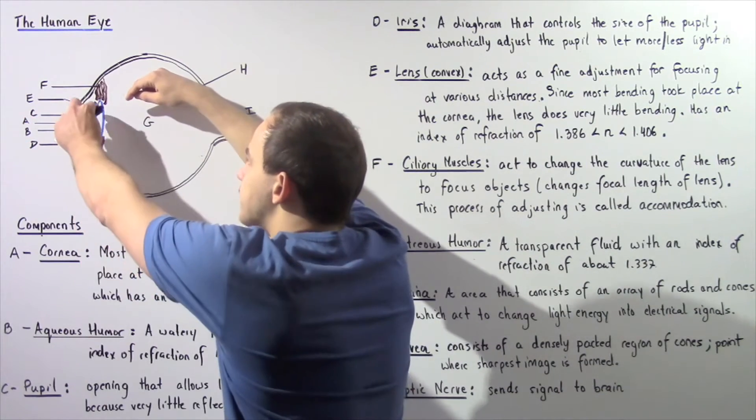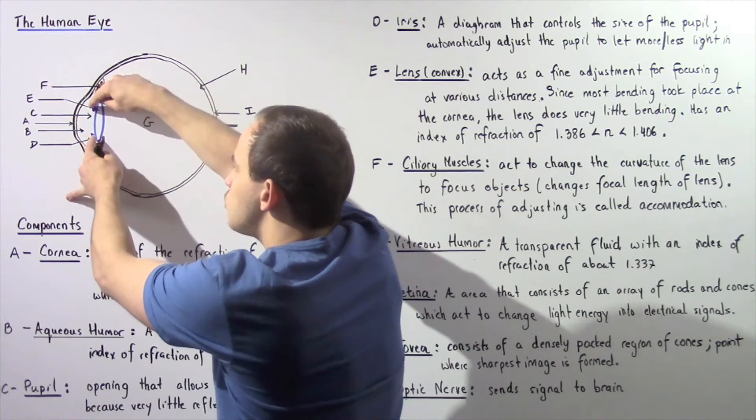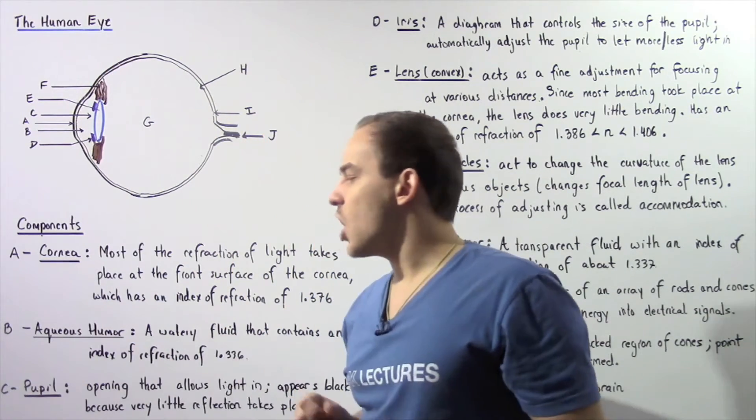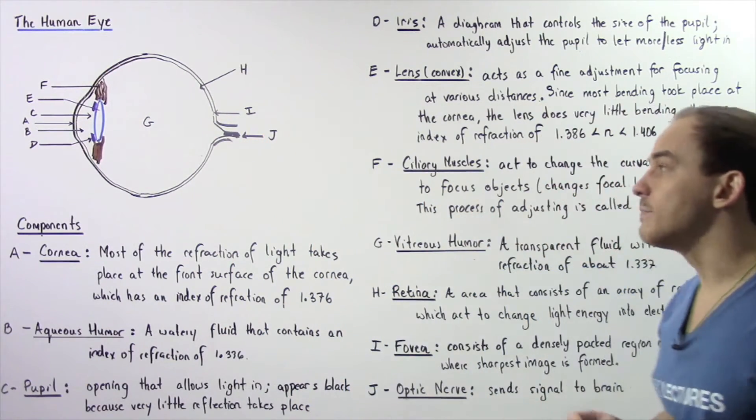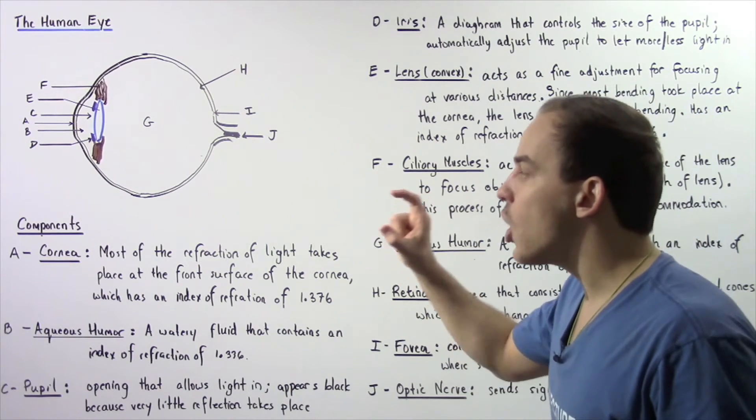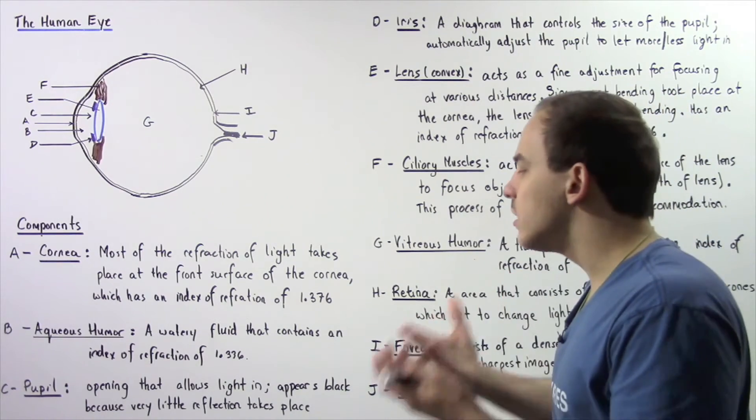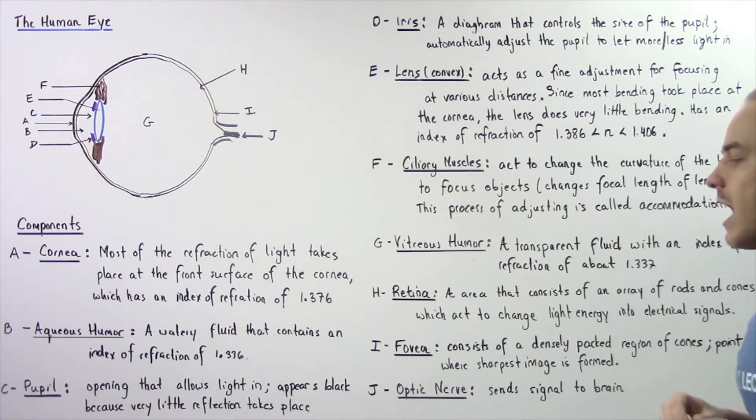Region C is shown by the following region between these two purple lines. This is known as the pupil of the eye. The pupil of the eye is essentially the opening of the eye that actually allows the light to travel into the eye.